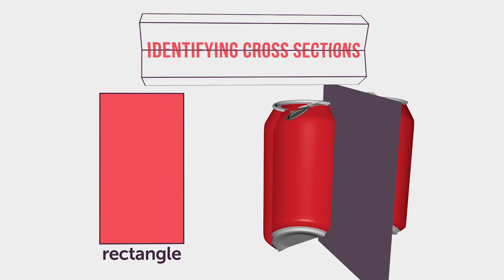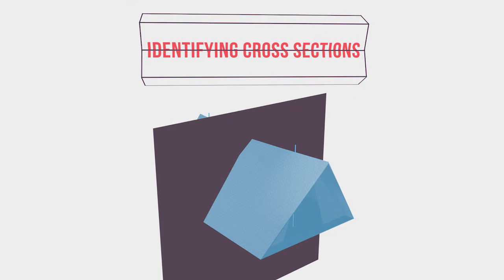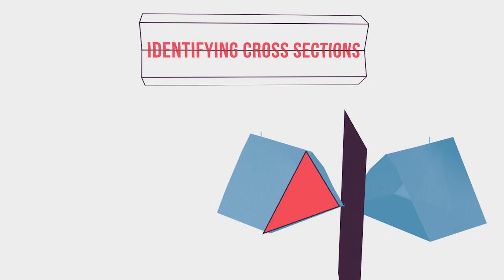Look at another example of cross sections. You are given the three-dimensional figure of a tent. What two-dimensional shape would form if the tent was cut vertically? With a vertical cut, the cross section would be a triangle.